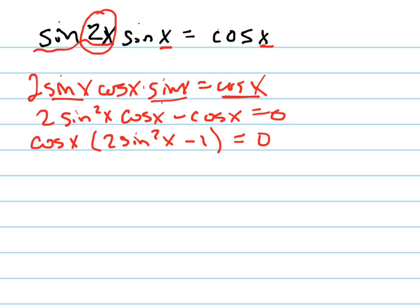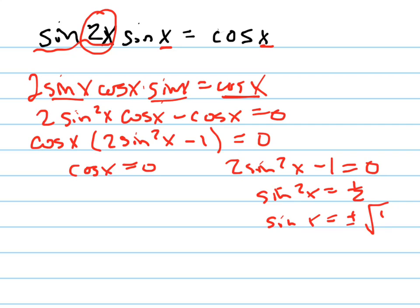Now I'm going to break this up into two. Cosine x equals 0, and 2 sine squared x minus 1 equals 0, which means sine squared x equals 1 half, which means sine x equals plus or minus the square root of 1 half, which is plus or minus the square root of 2 over 2, which should look familiar to you.